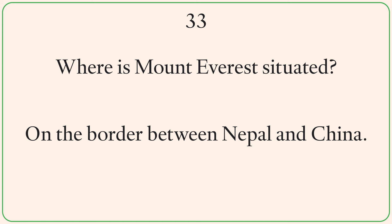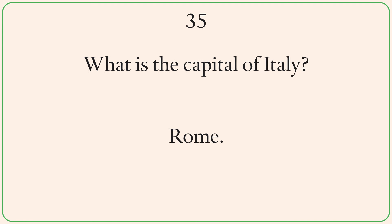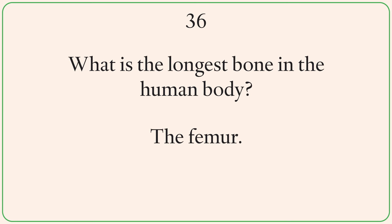Where is Mount Everest situated? On the border between Nepal and China. What is the primary ingredient in chocolate? Cocoa beans. What is the capital of Italy? Rome. What is the longest bone in the human body? The femur.